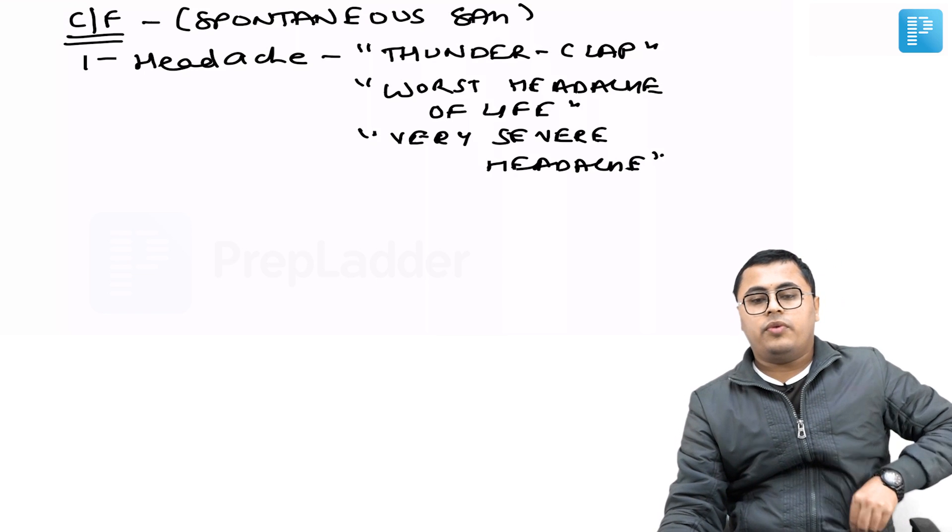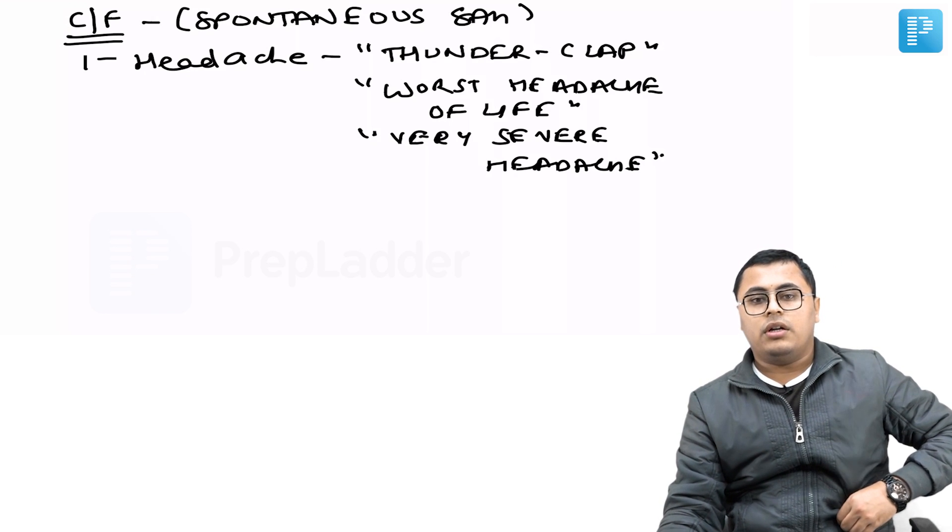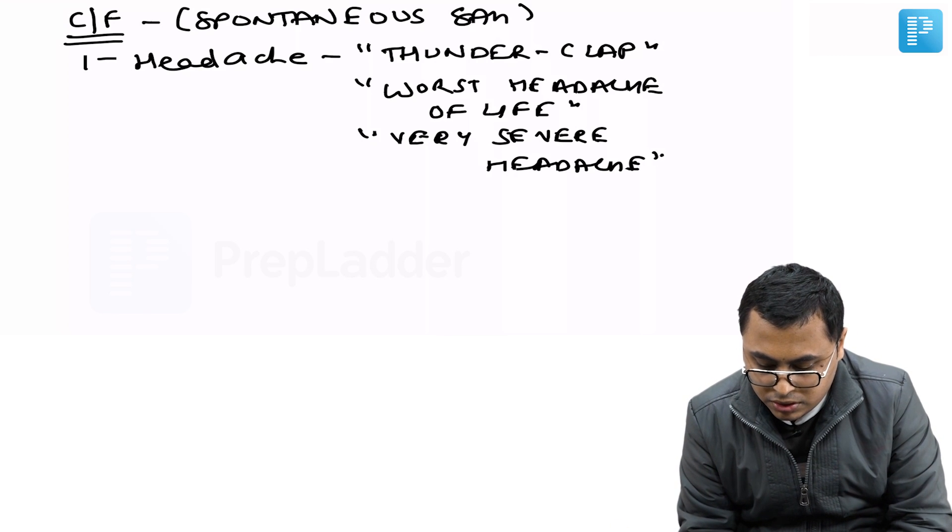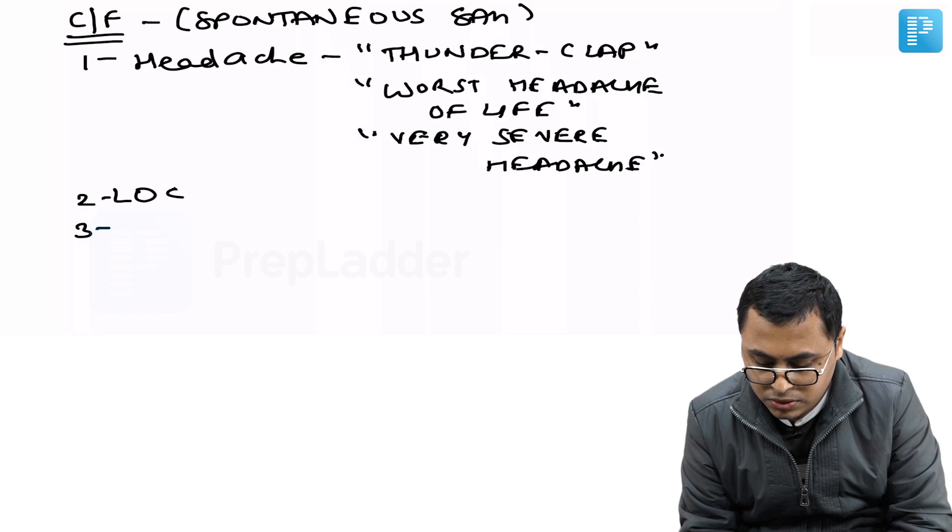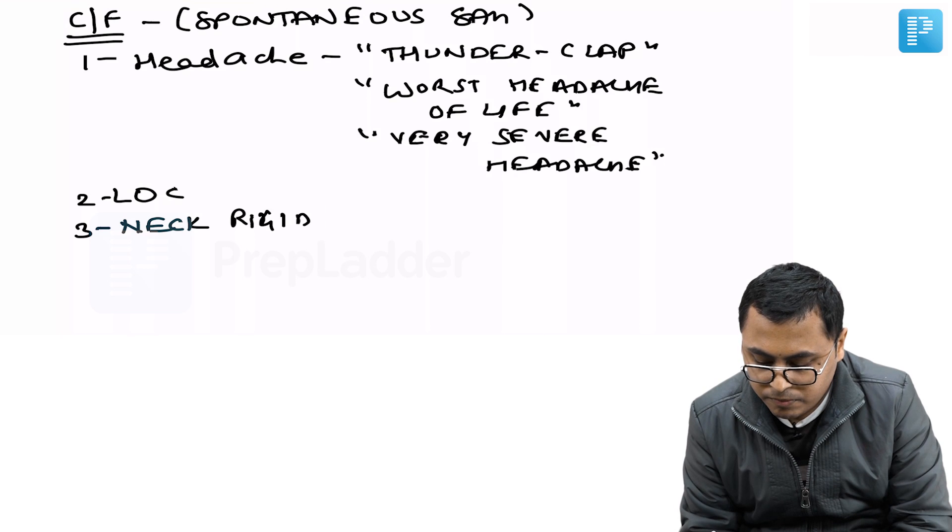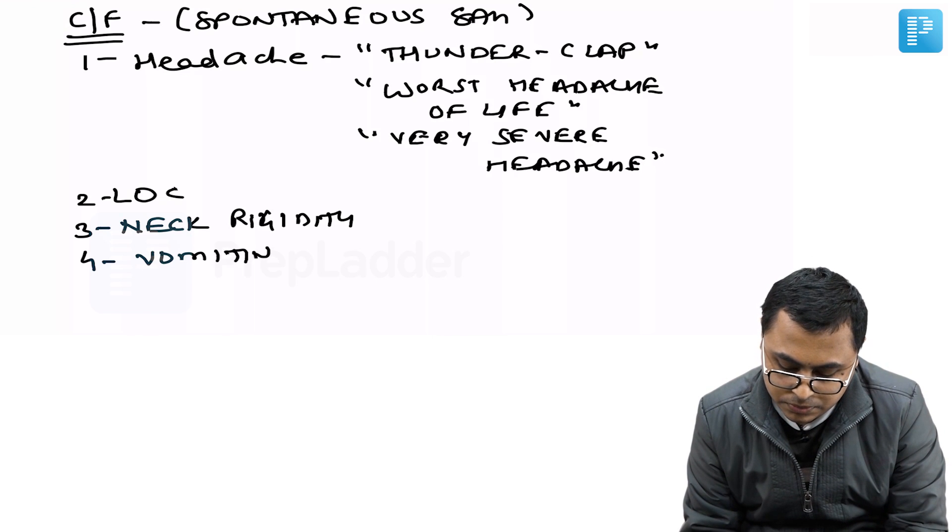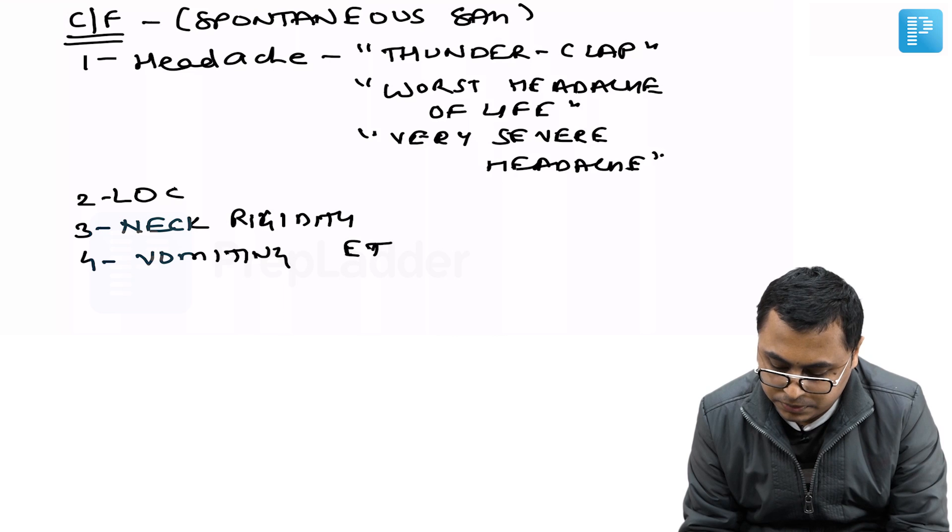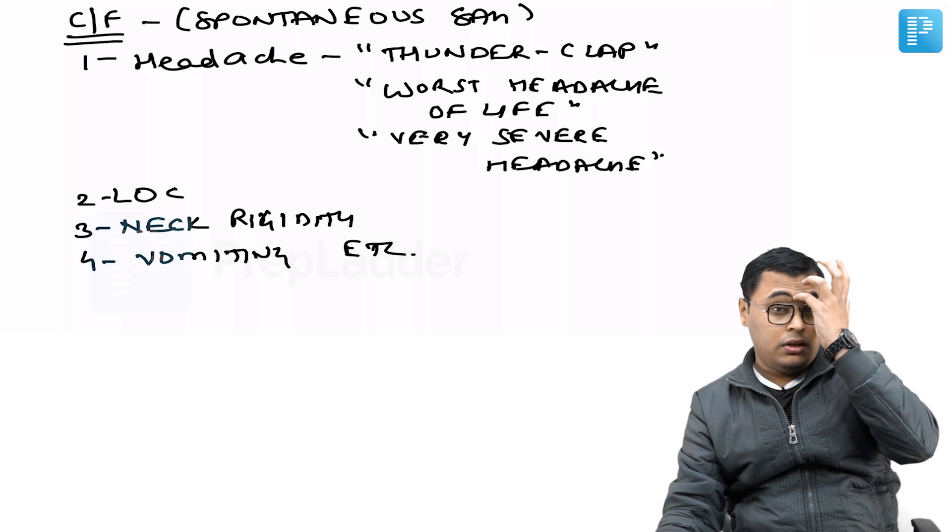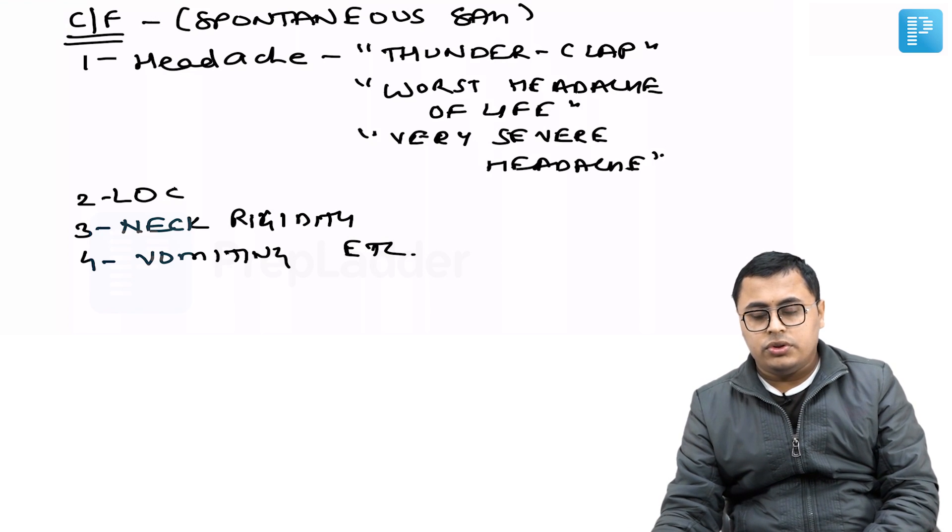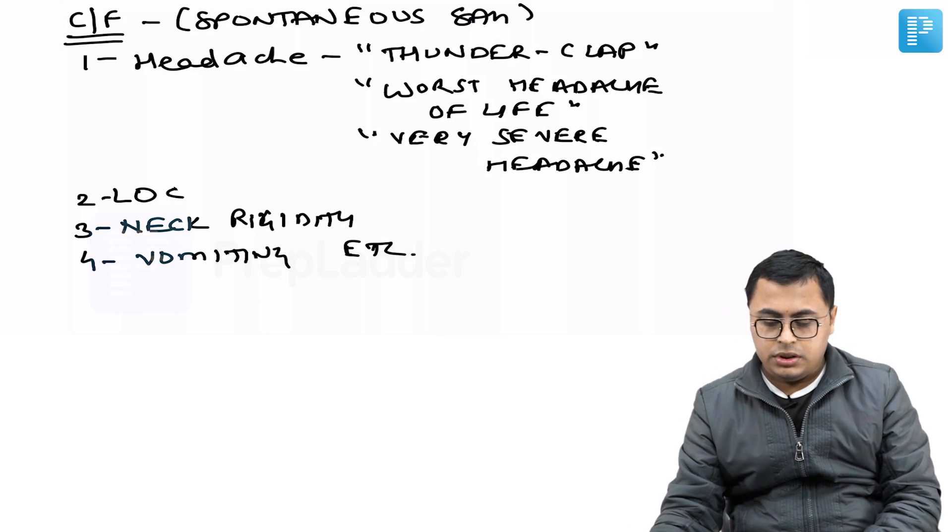Classic questions use words like thunderclap headache, worst headache of life, and very severe headache. This is associated with loss of consciousness, neck rigidity, and vomiting. These are the classic features.